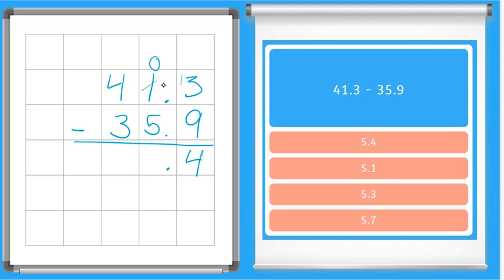Bring down our decimal. Now can we take five from zero? No we cannot so we're going to have to borrow from the tens place. Four becomes a three. Bring one over so 10 minus five is five and then three minus three is zero so we don't have to write anything there. 5.4 or five and four tenths is our final answer.